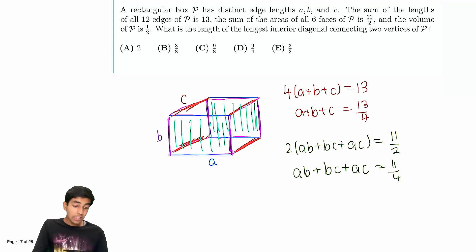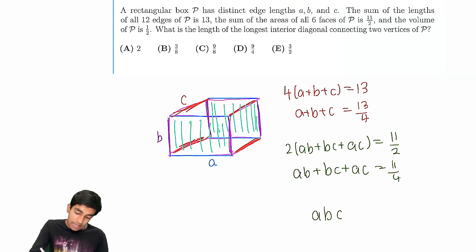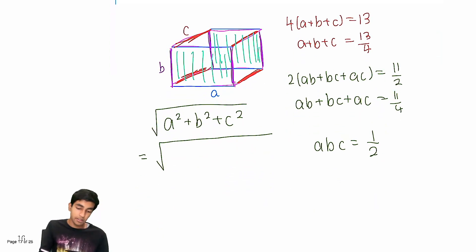And finally, the volume is 1/2, or abc = 1/2. Now we're asked to find the length of the longest interior diagonal connecting two vertices. This is, of course, the space diagonal: √(a² + b² + c²). Well, we can ignore the square root initially. Let's first find the value of a² + b² + c².